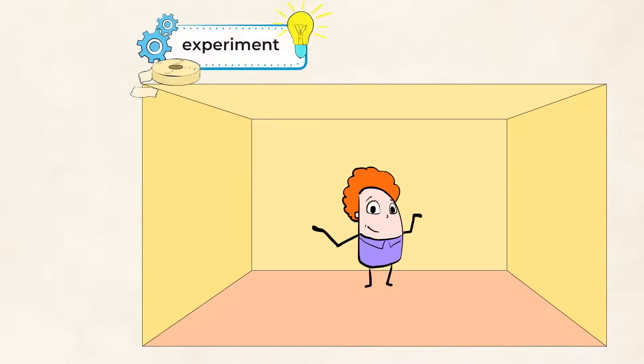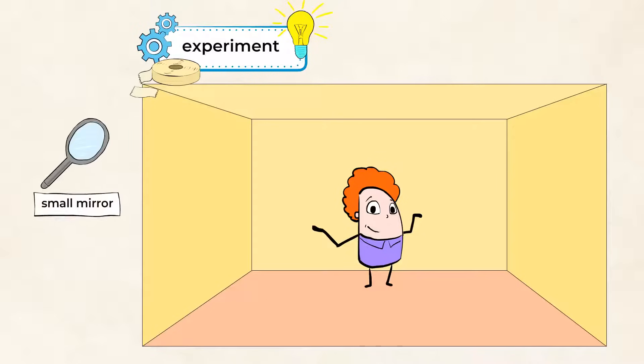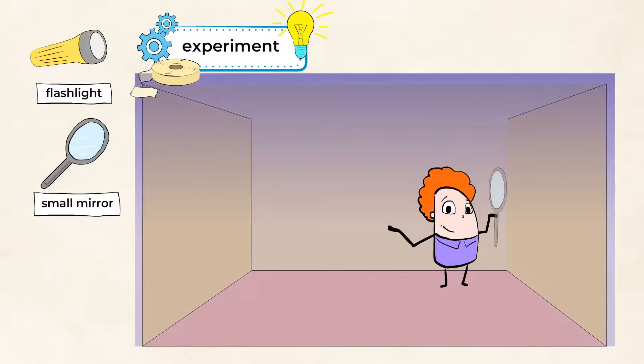Now here's an experiment that we can do to learn more about light and reflection. We need a small mirror and a flashlight. Now in a dark room, hold the mirror next to a wall. Shine the flashlight close to the mirror and try to see if you can follow the light. What happens when the light hits the mirror?